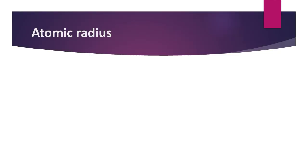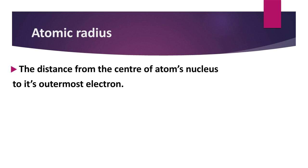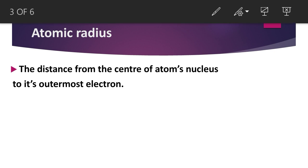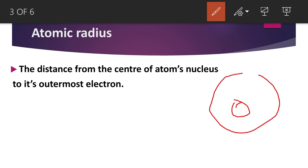First is atomic radius. The atomic radius is the distance from the center of the atom's nucleus to its outermost electron. An atom is composed of a nucleus — which consists of neutrons and protons — and electrons revolving around the nucleus. The distance from the center of the nucleus to the outermost electron is known as the atomic radius.